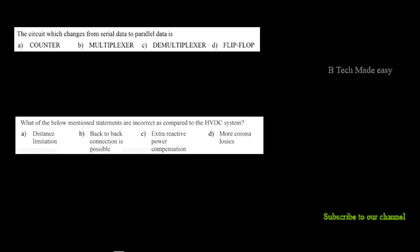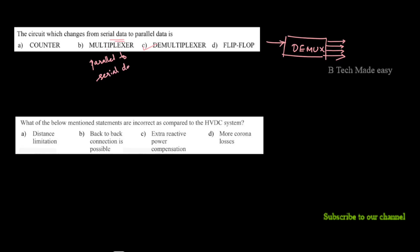Which circuit converts serial data to parallel data? The answer is a demultiplexer (demux). A demux has a single input and many outputs, performing the serial-to-parallel data conversion. The reverse — parallel to serial — is done by a multiplexer.